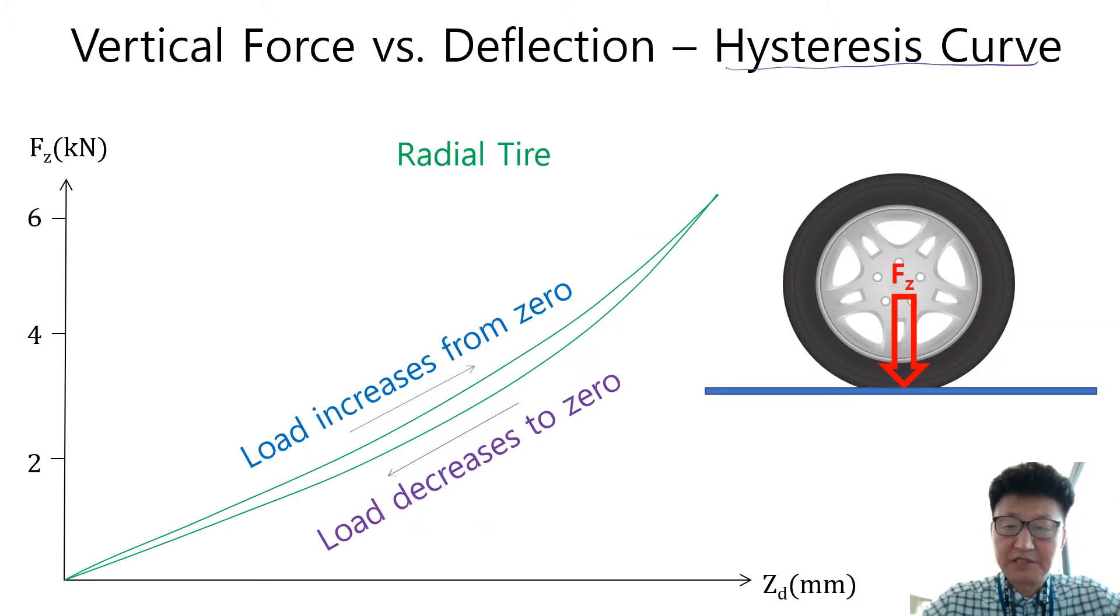Let's study hysteresis curve on vertical force versus deflection. The concept of hysteresis is loading and unloading curves show different shapes respectively, as shown in the picture. When loading, load increases from zero experiencing the upper green curve. When unloading, load decreases to zero experiencing the lower green curve. The reason why the curves of loading and unloading are different from each other is that internal energy enclosed by green curves is dissipating by internal friction.